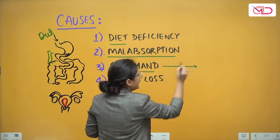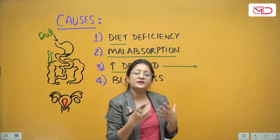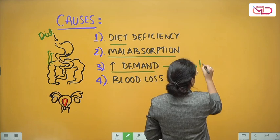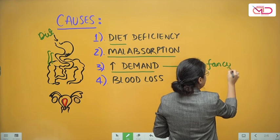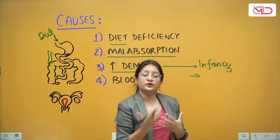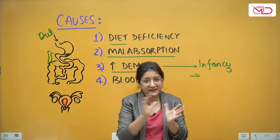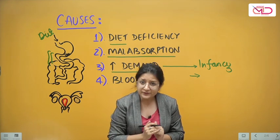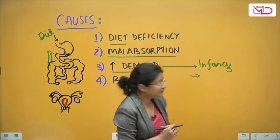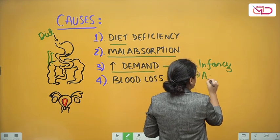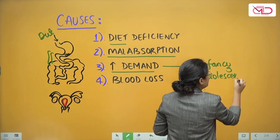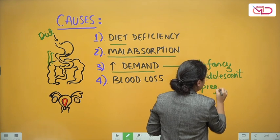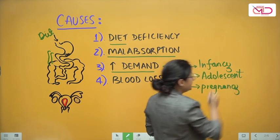Periods of growth such as infancy represent an at-risk period — infancy is a period of rapid growth, and an infant who is entirely breastfeeding, especially in the first six months of life, is at risk because breast milk is a poor source of iron. Adolescence is another period of growth with increased iron demand, and finally pregnancy, when the demand for iron is increased.